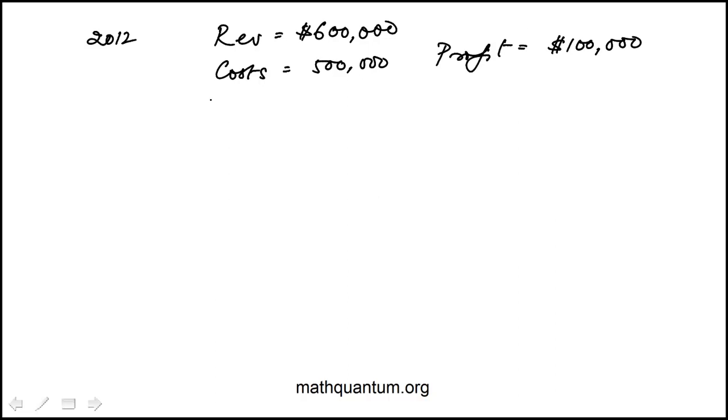Now they tell us that the following year the company's revenue increased by 5%, so 5% of $600,000, that's going to be $30,000. And they say that the total cost stayed the same, so your revenue is now $630,000, total cost stays the same, so the profit is now $130,000.